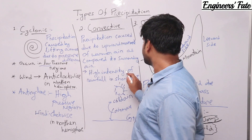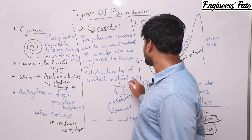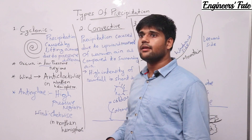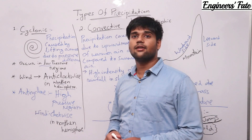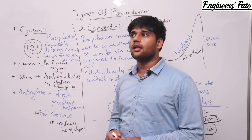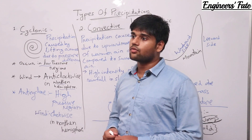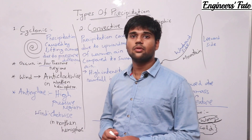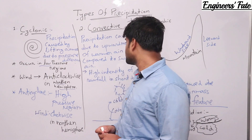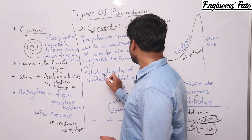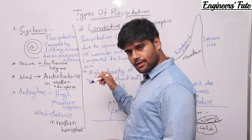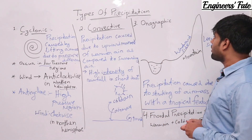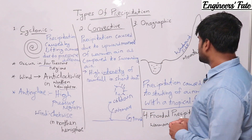Convective precipitation normally happens with high intensity of rainfall in short duration — the intensity of rainfall is quite high but the duration is less. We will discuss intensity later. Next is orographic precipitation.